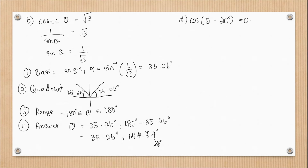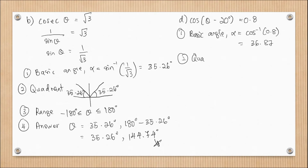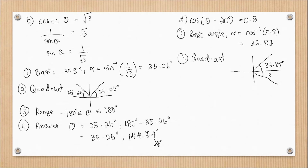Question 9d: cos(θ − 20°) = 0.8. Step one, basic angle: arccos(0.8) = 36.87°. Step two, determine the quadrant: cosine is positive, so using the CAST rule, positive cosine is in quadrant one and quadrant four. We have 36.87° in quadrant one and 36.87° in quadrant four.